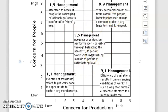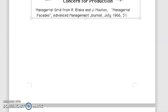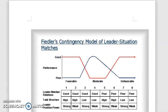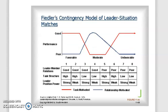This is about the managerial grid. A manager should consider whether they fall at 1,1; 1,9; 9,1; 5,5; or 9,9. The 9,9 coordinate is the best because the best teamwork is normally achieved there. Next we move on to Fiedler's contingency model of leadership situations, which is called the situational or contingency approach to leadership.